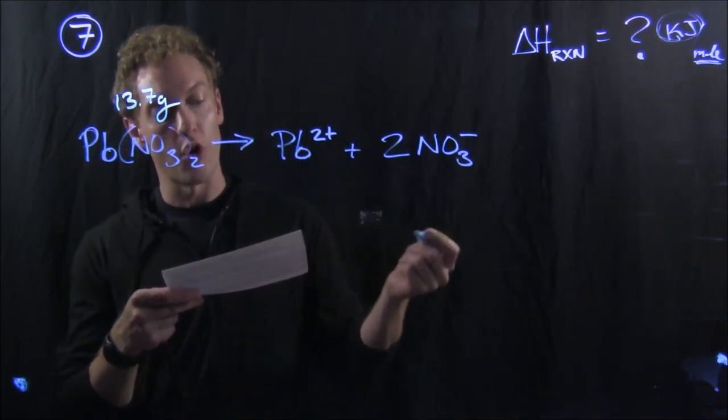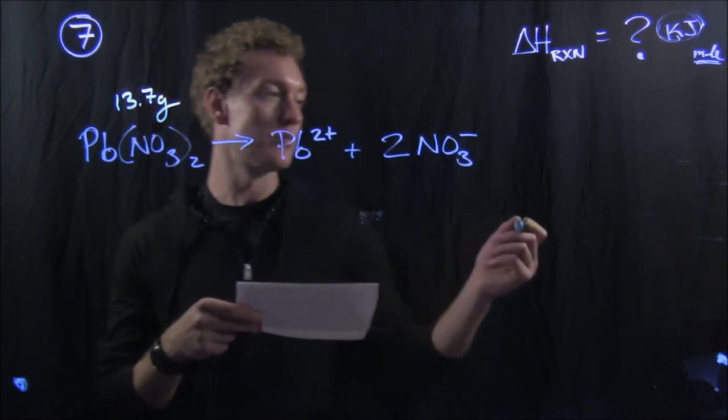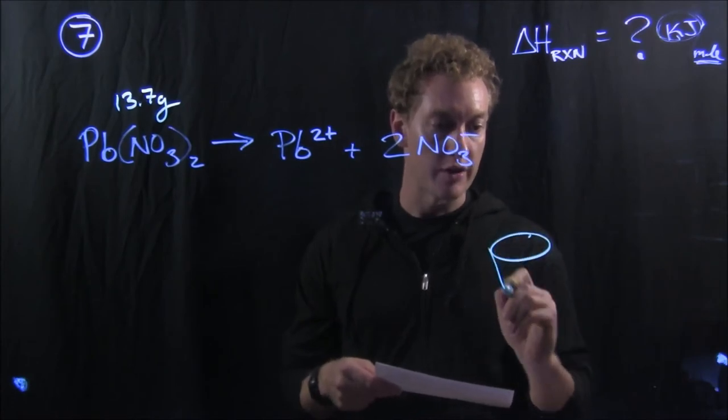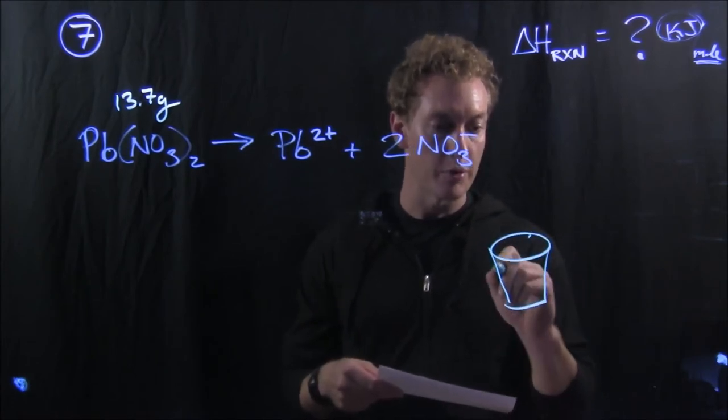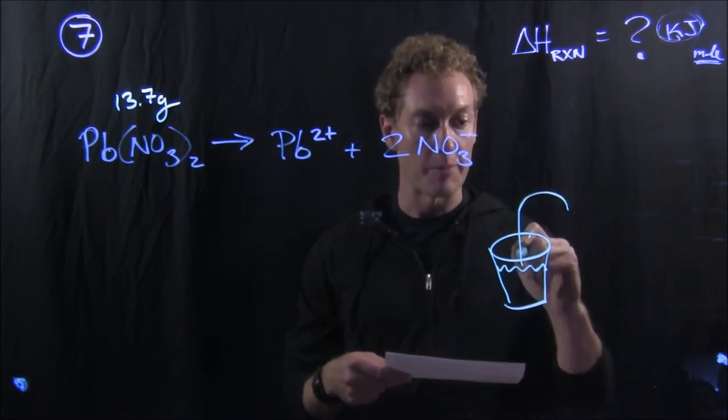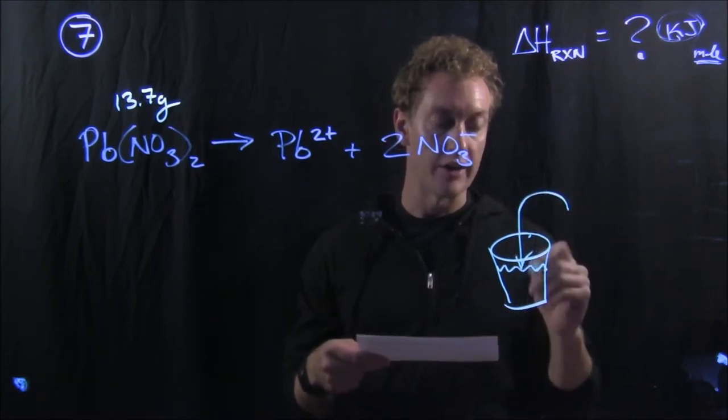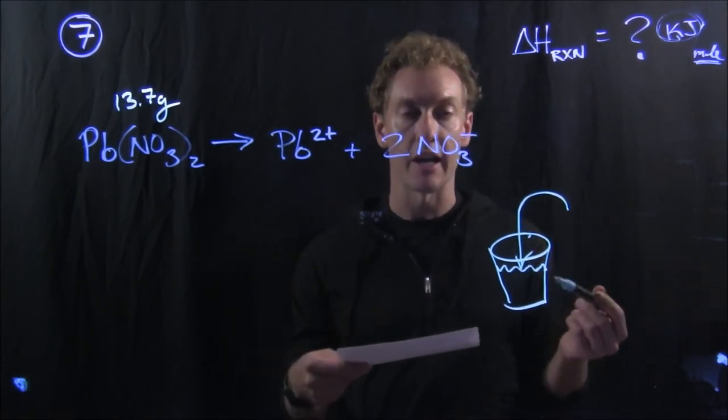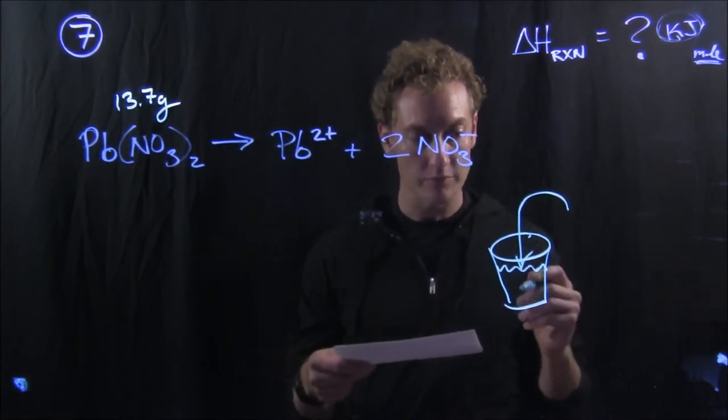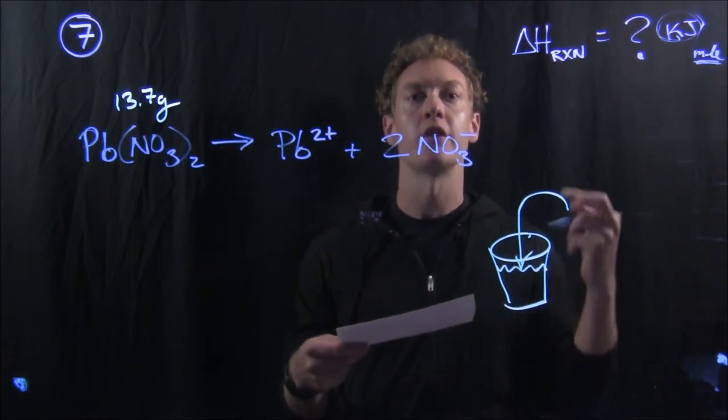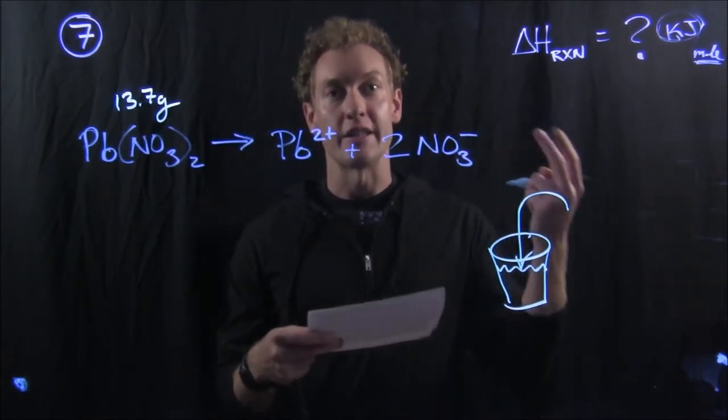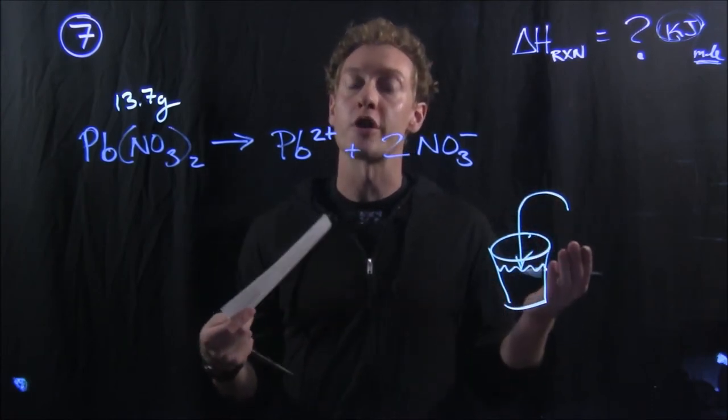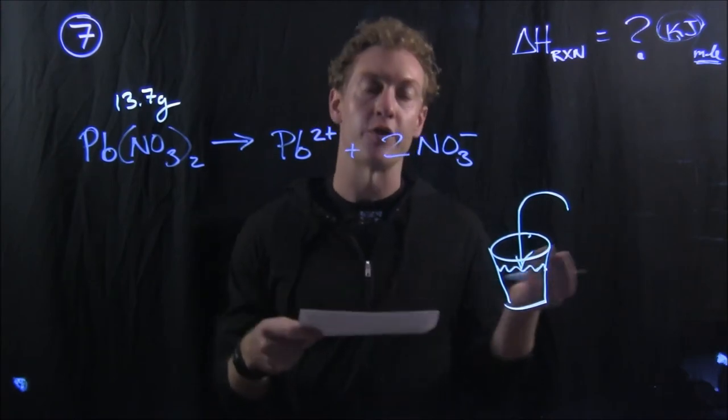So this occurs in water inside of a calorimeter. You can imagine it - we've done something like this in lab. You take something like a coffee cup, you've got water in there, you drop stuff in there, and the temperature of that water is going to change as a result of the chemical process going on inside of that water. So the water serves two functions. The water is the medium through which the chemical reaction can occur, but the water is also there as an energy transfer medium.